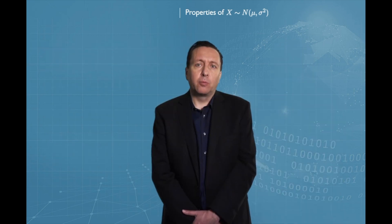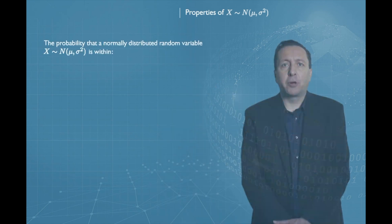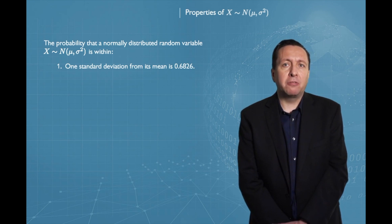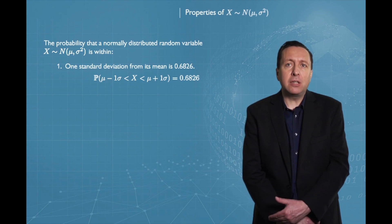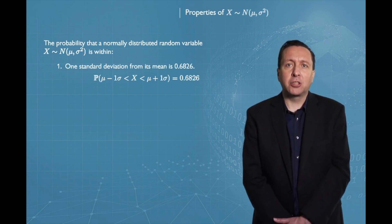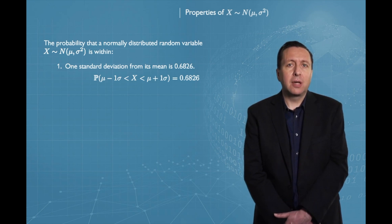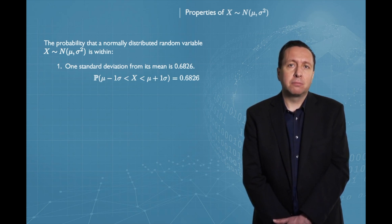In particular, what turns out to be true for normal distributions, just as a consequence of the formula, is that the probability that a normal distribution is going to attain a value which is at most one standard deviation away from its mean is 68%, regardless of what the mean and standard deviation of that distribution are. As long as I know that this distribution is normally distributed, I know there is a 68% chance that my observation is going to be within one standard deviation from the mean.